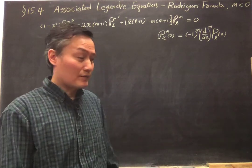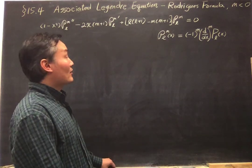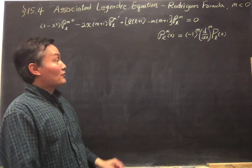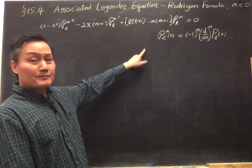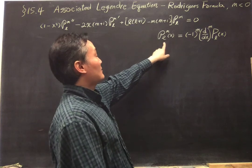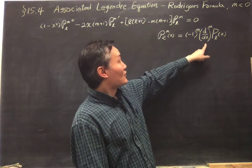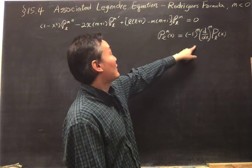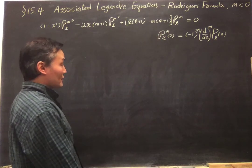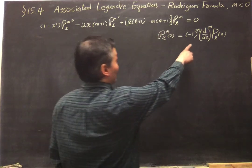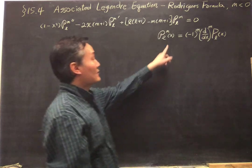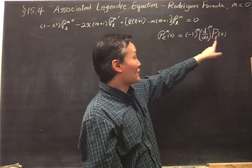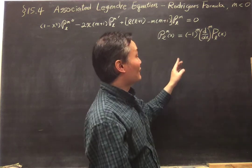We continue on section 15.4. Last time we considered the equation for the associated Legendre polynomial and showed that it can be written in a certain form. If we substitute this into the equation, we show that it indeed satisfies the associated Legendre equation. This is of the correct form; however, for this definition, because we're taking derivatives, the derivative has to be zero or positive, so m is zero or positive.